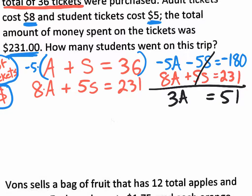We have 3A = 51. Divide both sides by 3, and you get A = 17.